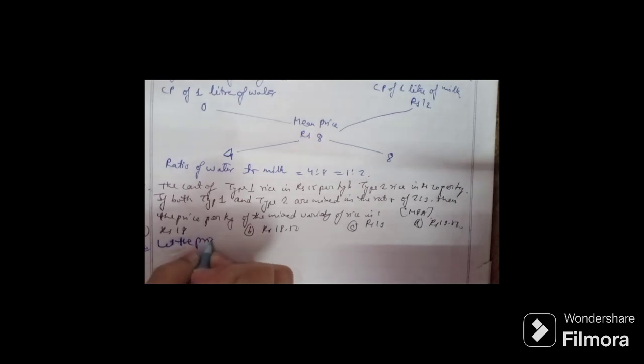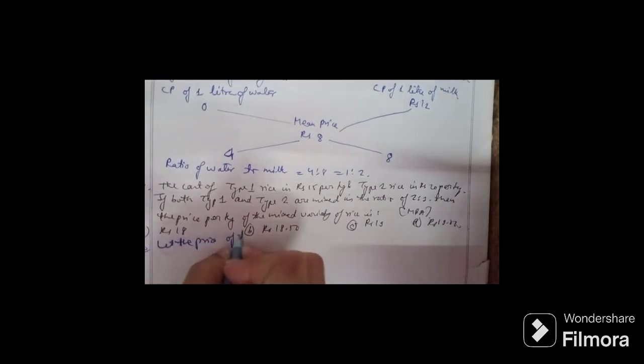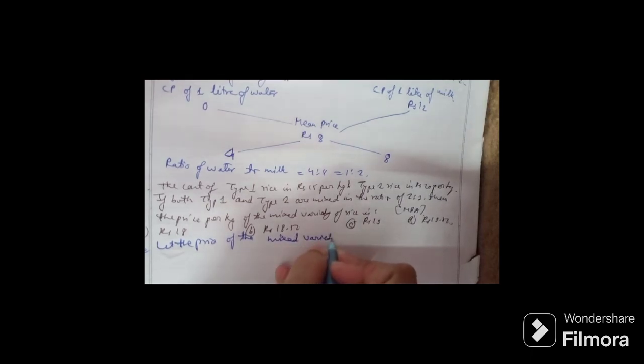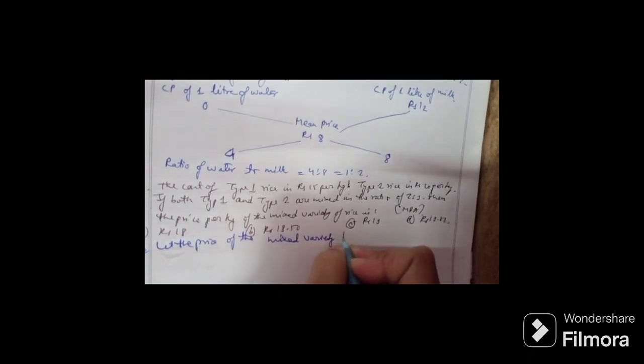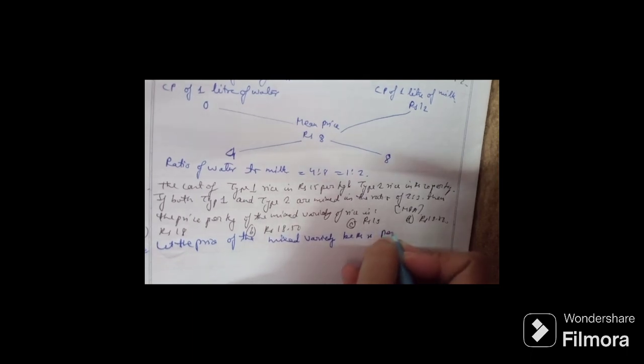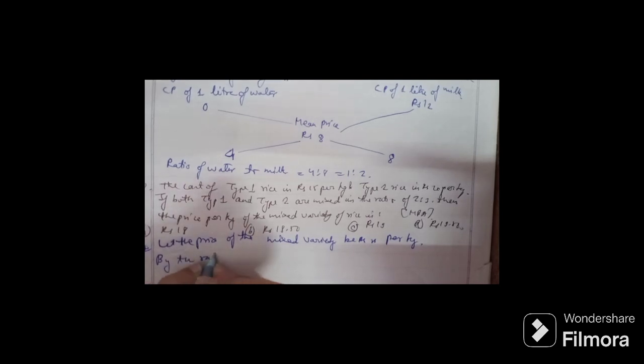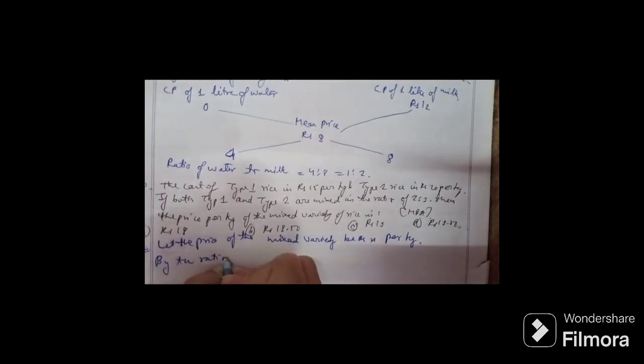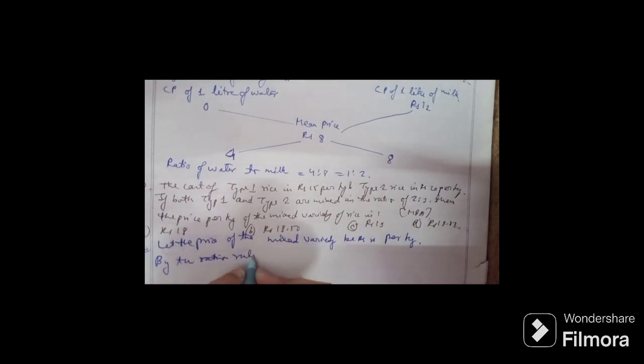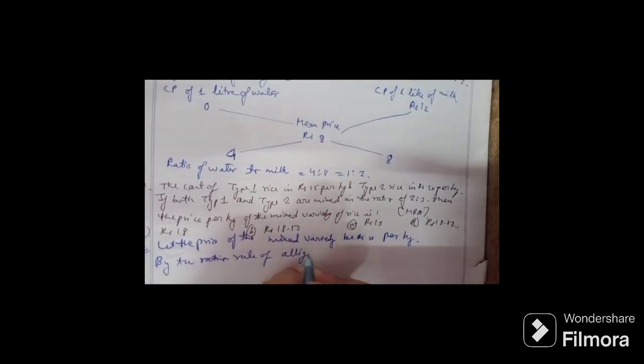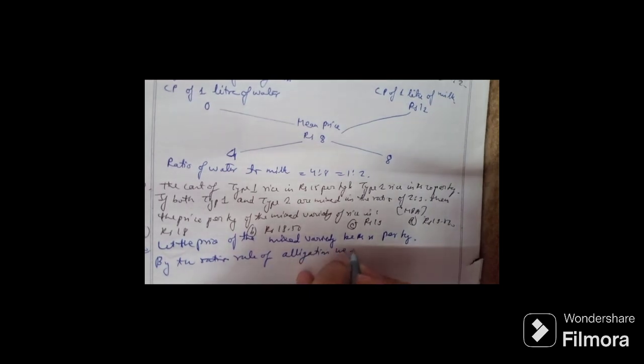Here we go. Let the price of the mixed variety be rupees X per kg. By the rule of alligation, we have: